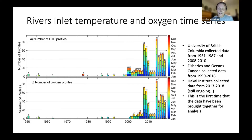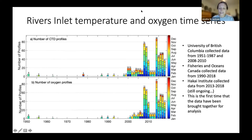There are three main groups who've collected data from Rivers Inlet: the University of British Columbia starting in 1951; Fisheries and Oceans Canada, who started sampling Rivers Inlet in about 1990; and the Hakai Institute, which has been collecting monthly samples since 2013 and that's still ongoing. These data were brought together for this analysis.